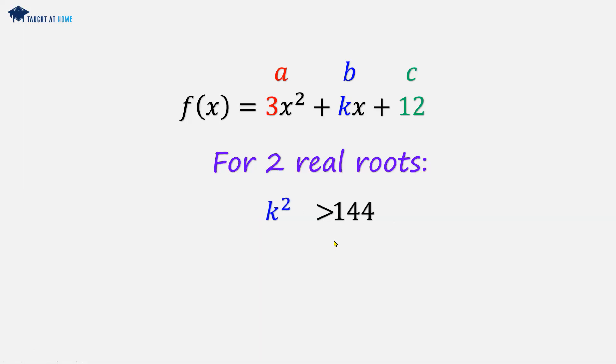So k² has to be greater than 144. We transpose this for k and evaluate it. So k has to be greater than the square root of 144, which is 12. So for two real roots, k has to be greater than 12.